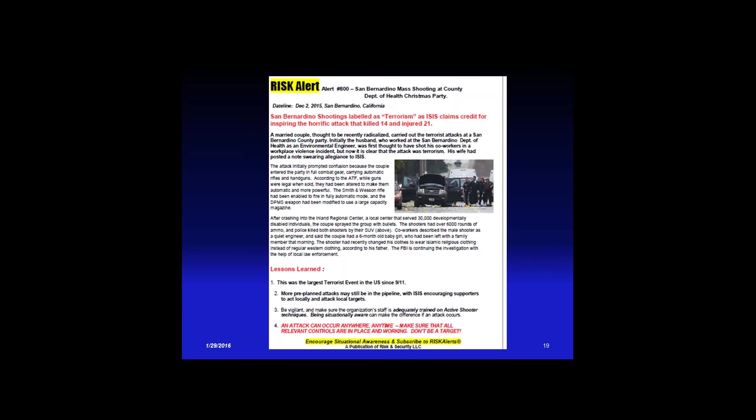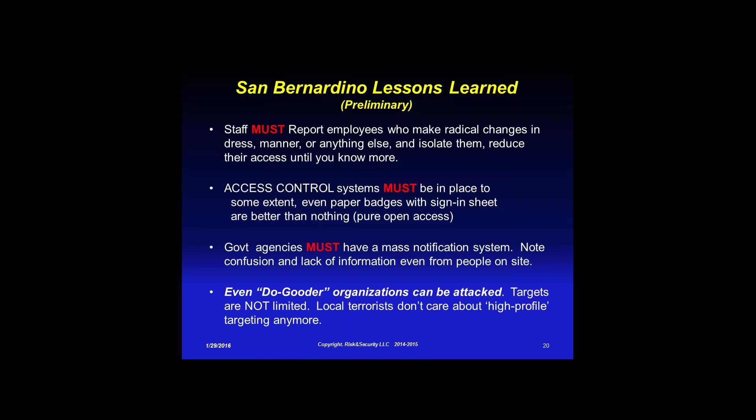What do we learn from San Bernardino? Report employees who make radical changes in dress or manner, and reduce their access until you know more. Access control systems need to be put in place to some extent — I'd prefer electronic but you can only do what you can do. Government agencies especially need a mass notification system.